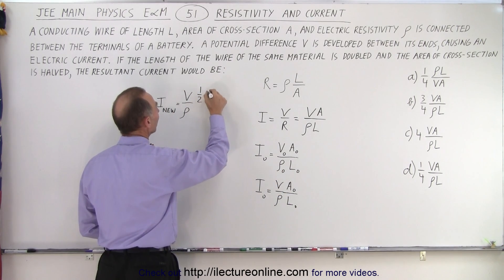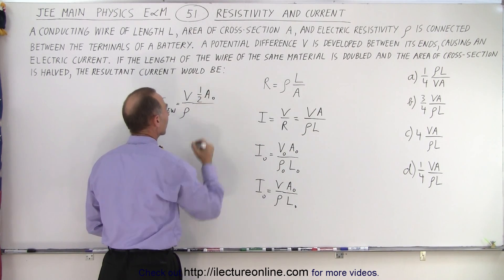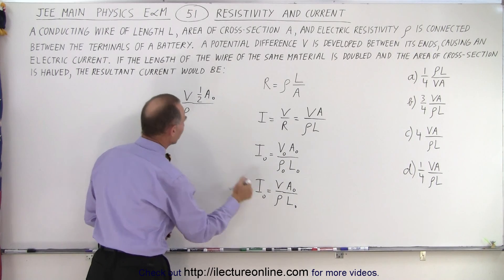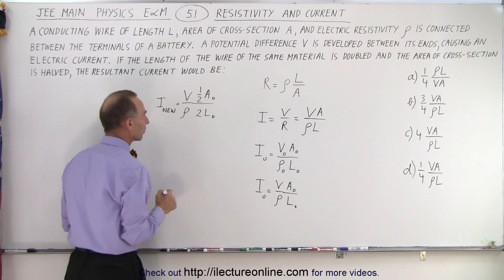So it's going to be one-half A sub-naught. And for the length, it's going to be double, so two times the original length.